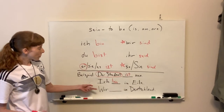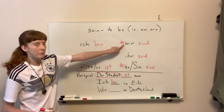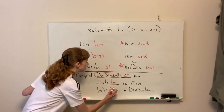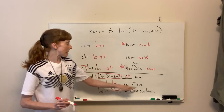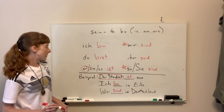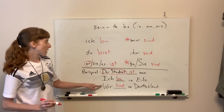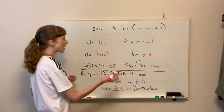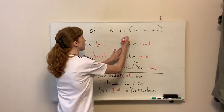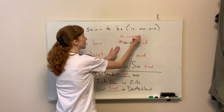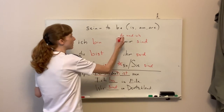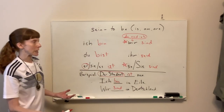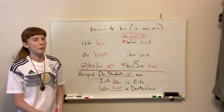The last one is also pretty simple — wir. Go to our chart, find wir, and put sind in the blank. Wir sind in Deutschland. A lot of times it can be tricky with wir if they give you a different subject, so be careful if you see something like du und ich — you and I — that would also be categorized as wir, as we. Sometimes they try to trick you with that.